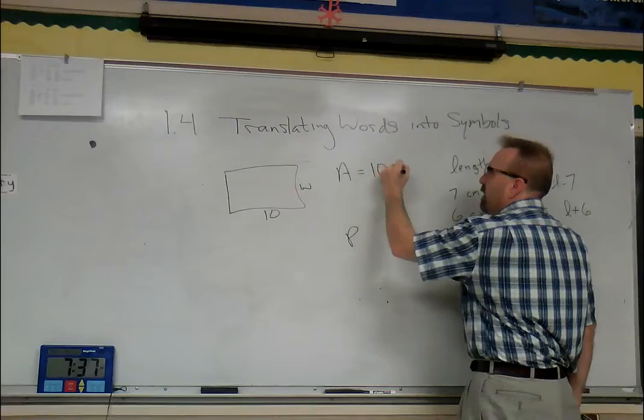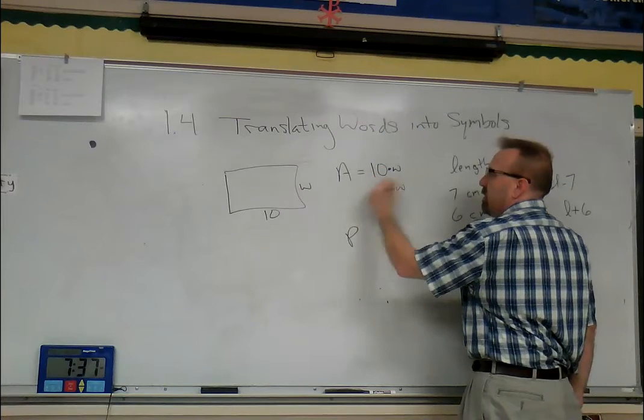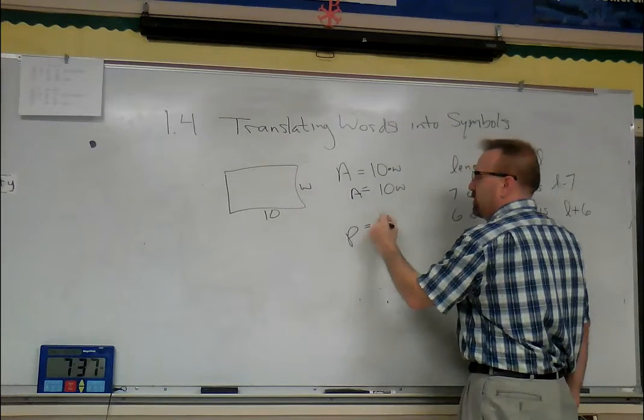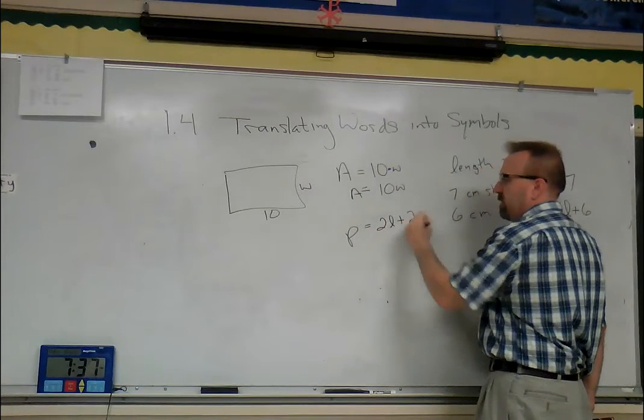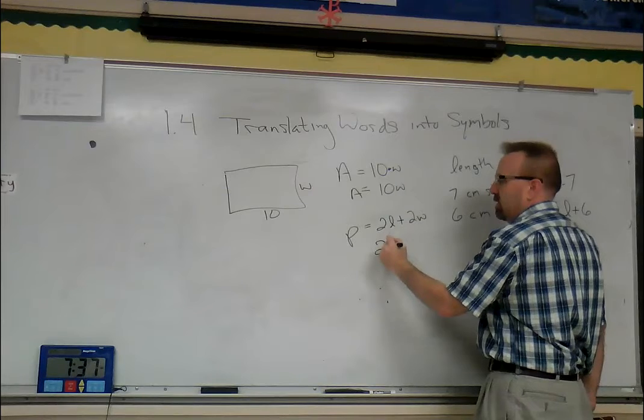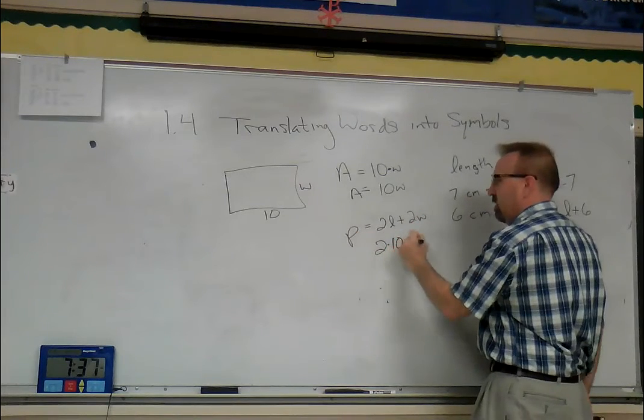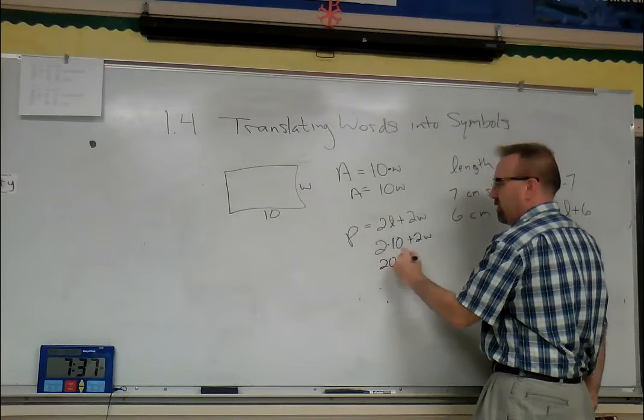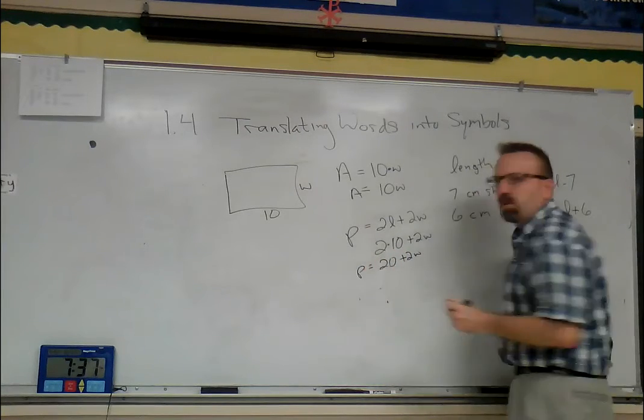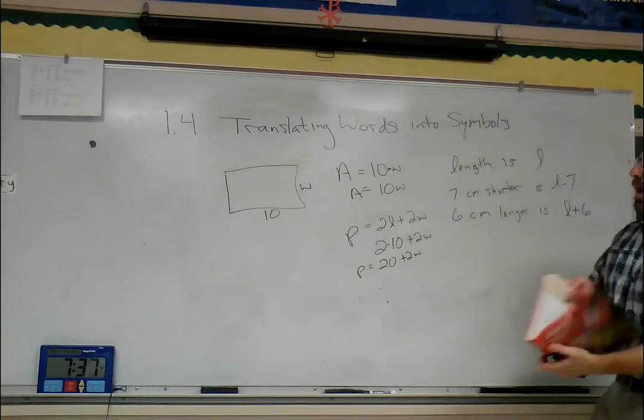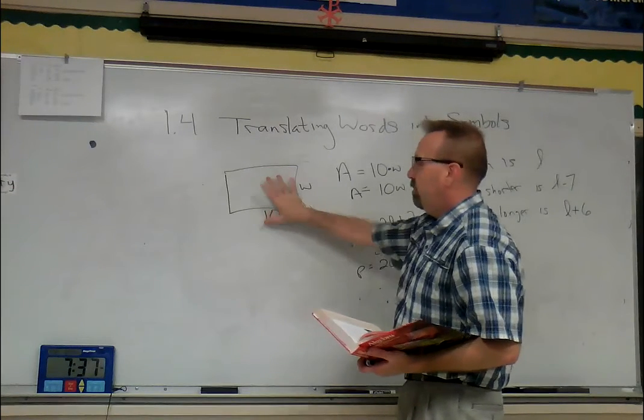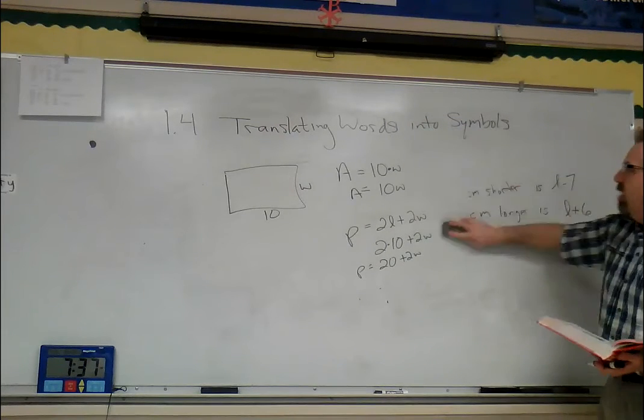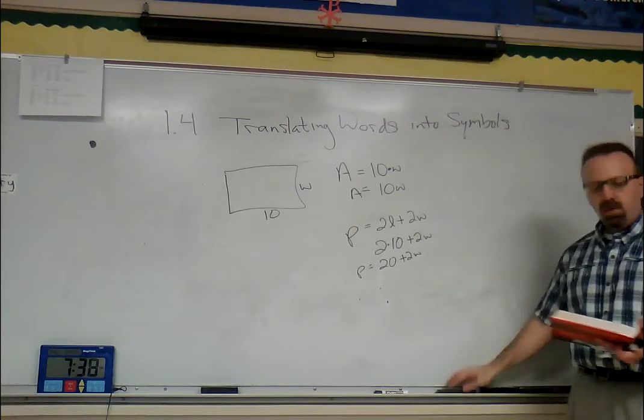10 times our width, so that would be 10w. Now our perimeter - we have two lengths plus two widths. What's our length? 10, 10. Our width is w, w. So 20 plus 2w for perimeter. The reason I like to draw pictures - it's easier than reading the words. You can just immediately look at it and see what goes where.